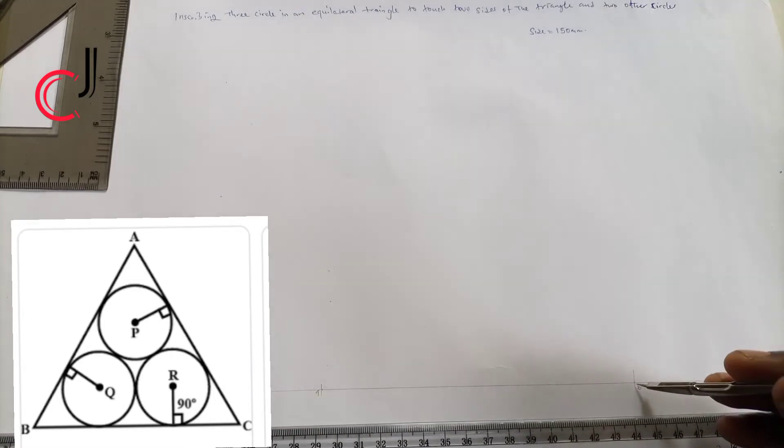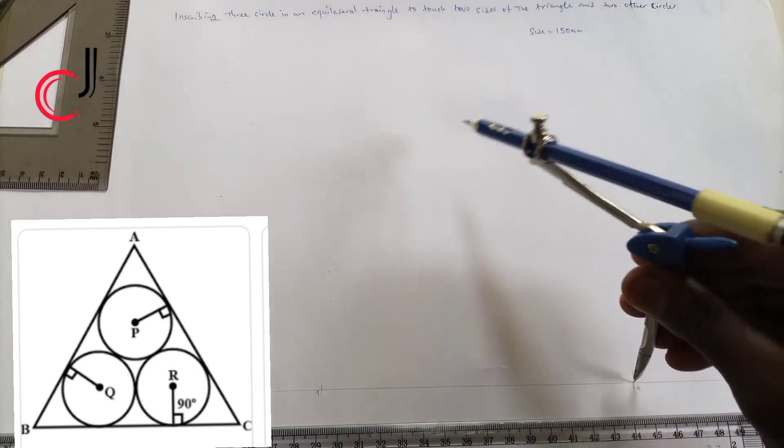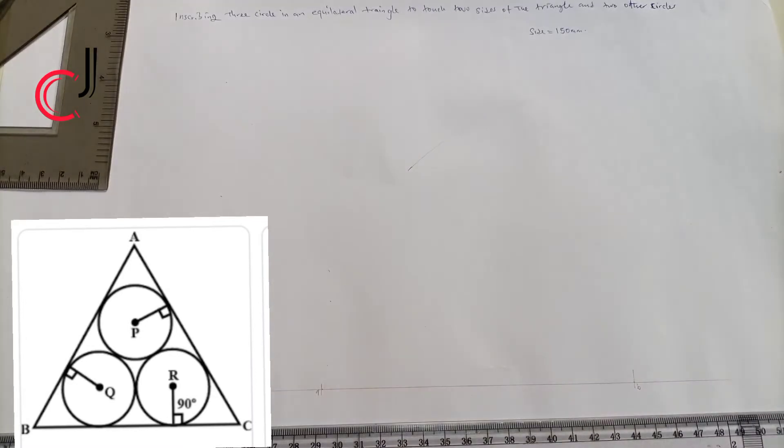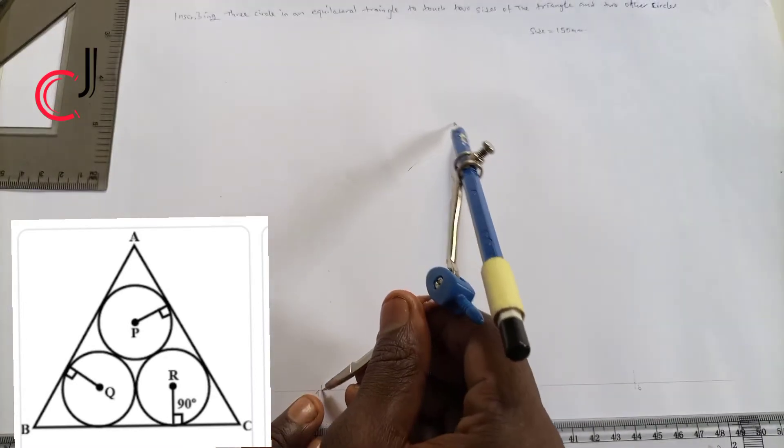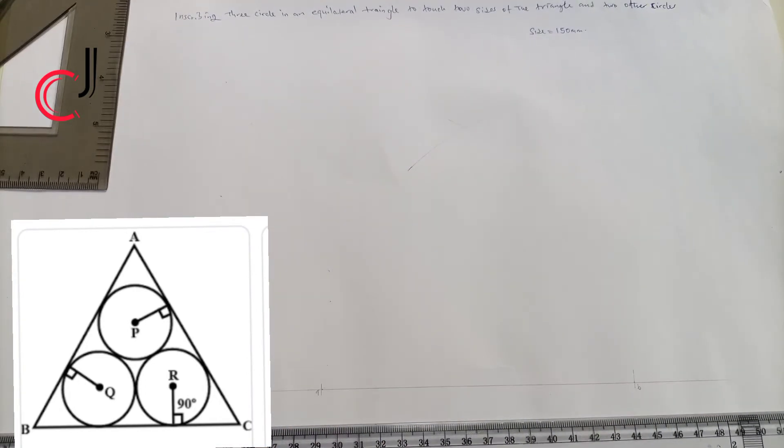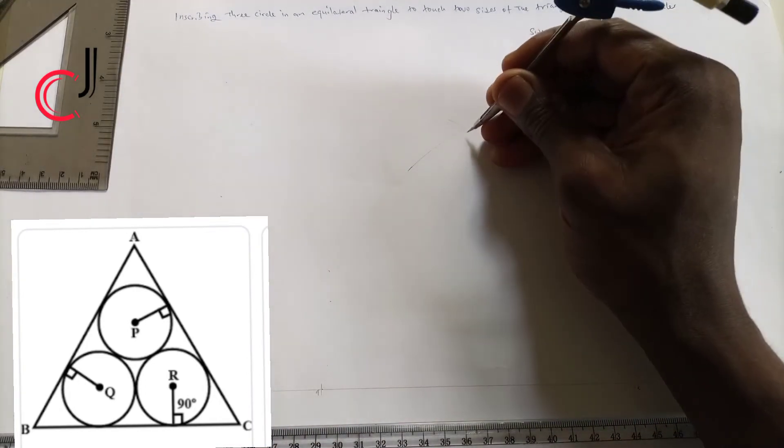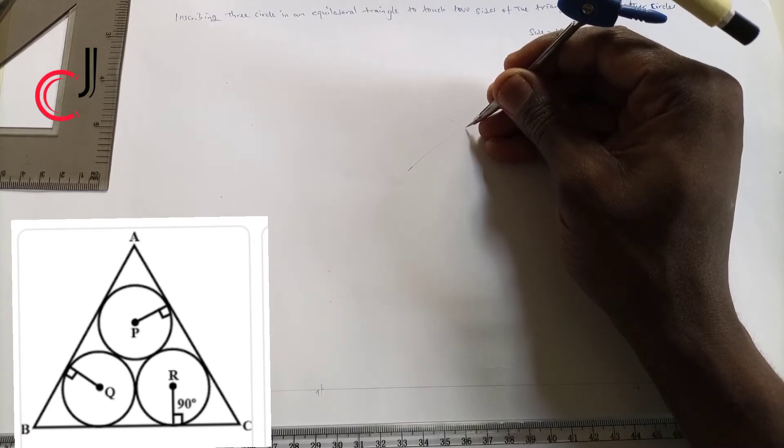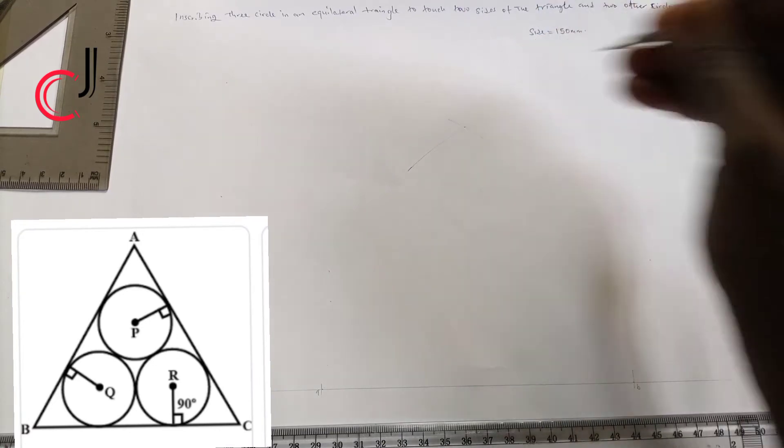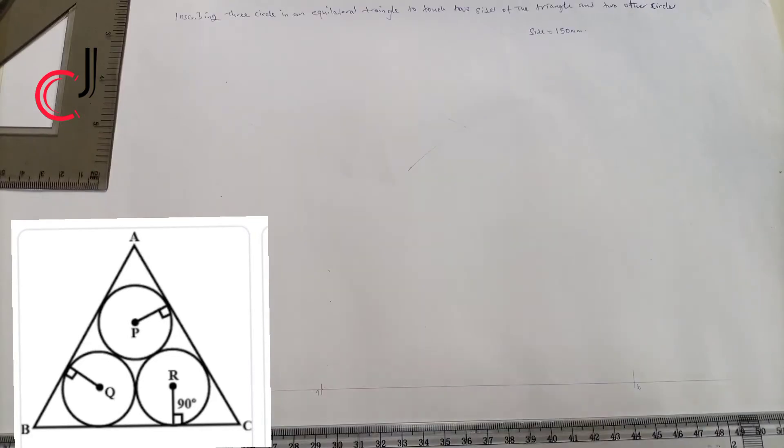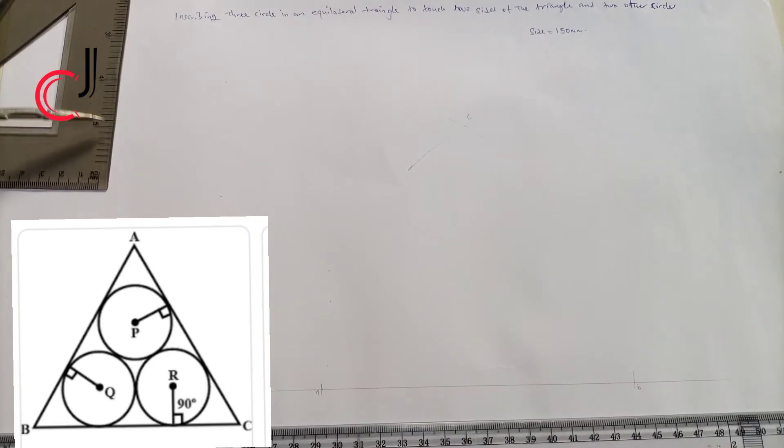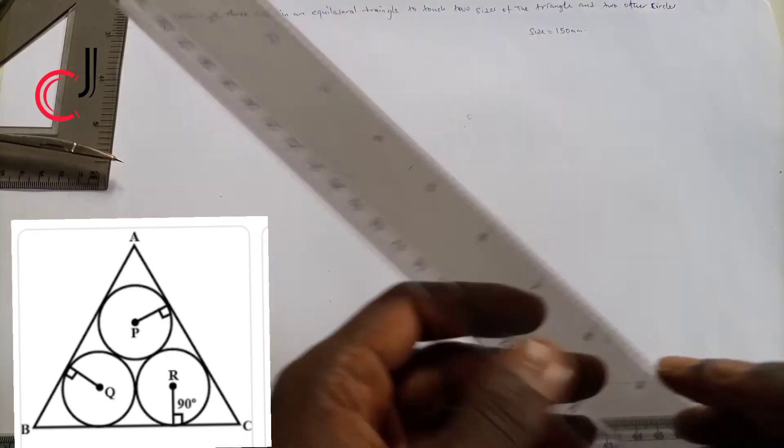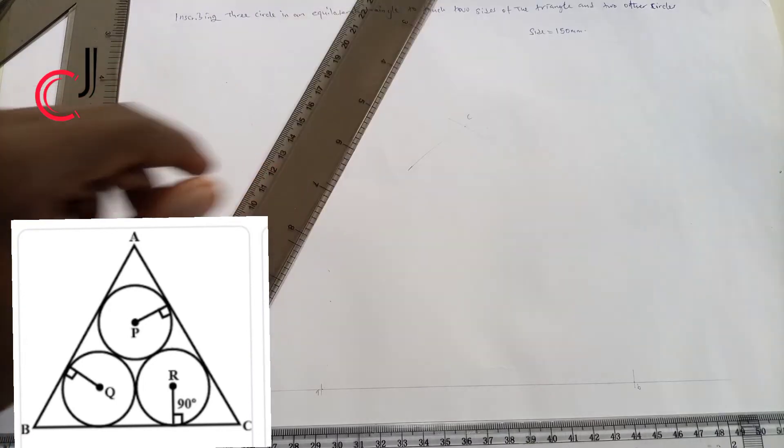From point B scribe an arc, then from A scribe an arc. You see where they intersect? Call that point C. Now use a ruler to join points A to C.